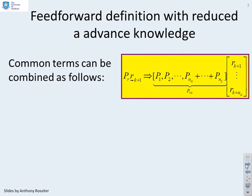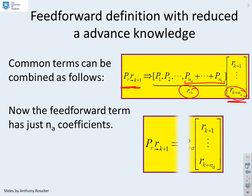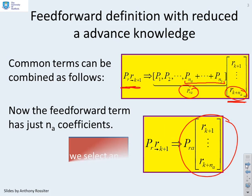In the previous video, we showed that although the default control law is PR times R_future, we're going to replace that by PRNA times the slightly shortened form of R_future. So we're only taking R_future values up to R_k plus NA, and we're adding together the last terms in the PR and therefore coming up with this vector PRNA. The feedforward term now has just up to NA coefficients.